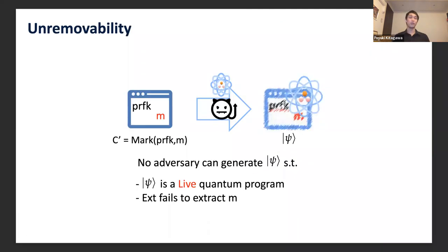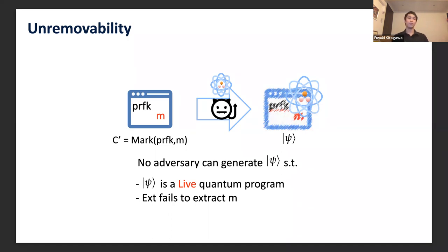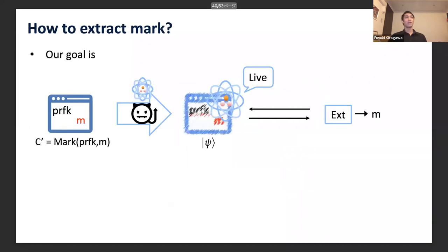Using the notion of live quantum programs, we can restate our definition of unremovability as follows. Given a marked evaluation circuit C' generated from a PRF key and mark m, which is given to an adversary who generates quantum program ψ, unremovability guarantees that no adversary can generate a quantum program ψ that is a live quantum program but for which the extraction algorithm fails to extract m. This is our definition of watermarking PRFs against quantum adversaries.